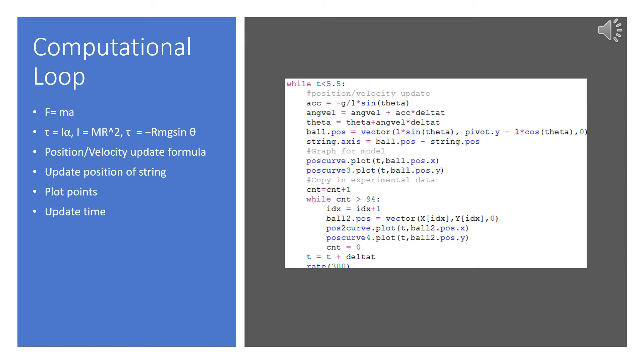I, or the rotational inertia, in this case, is mass times radius squared, and torque is negative radius times mass times gravity times sine theta. So after simplifying, angular acceleration is negative g divided by r times sine theta. In my code, instead of r for radius, I have l for length.